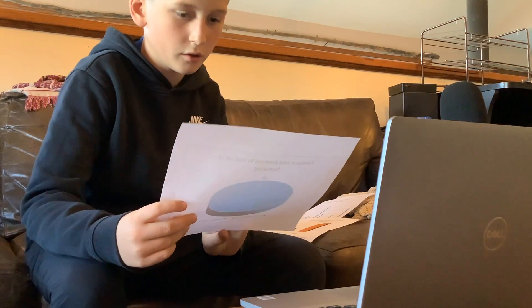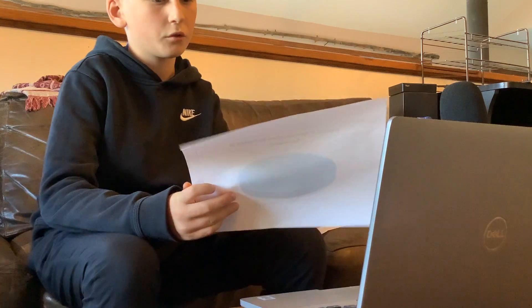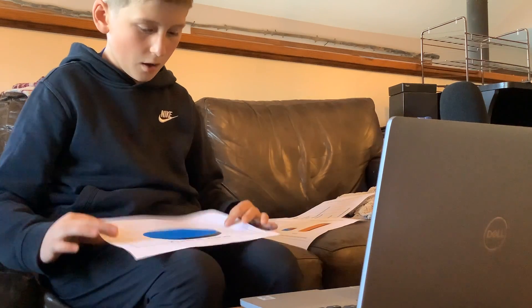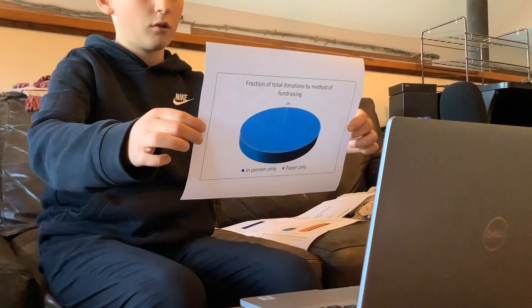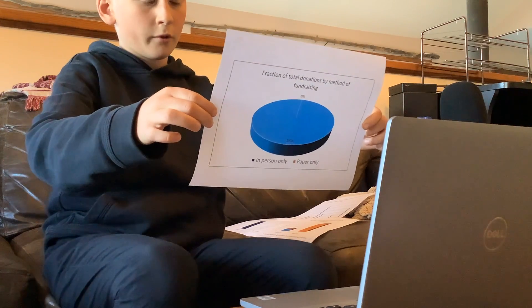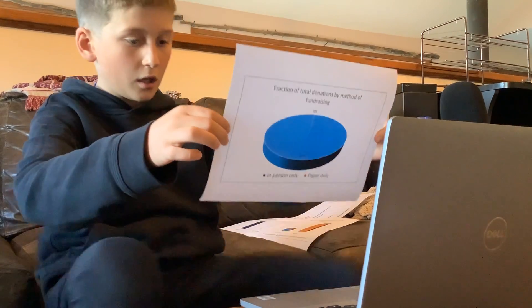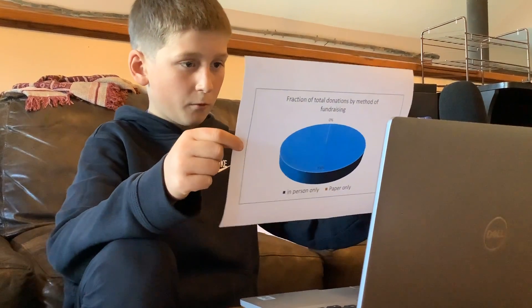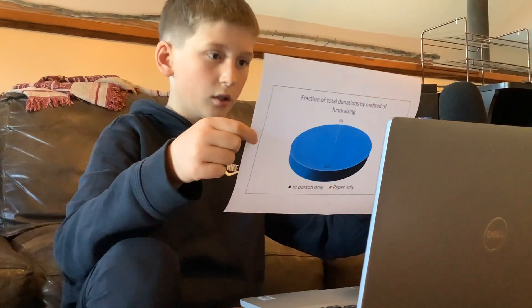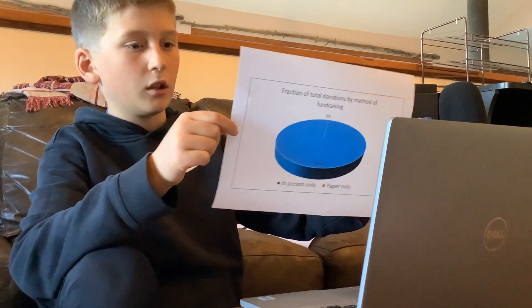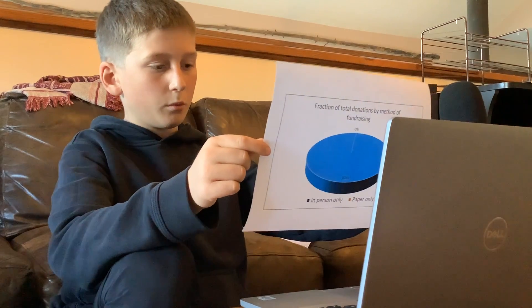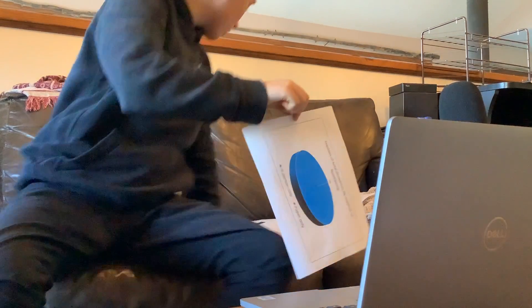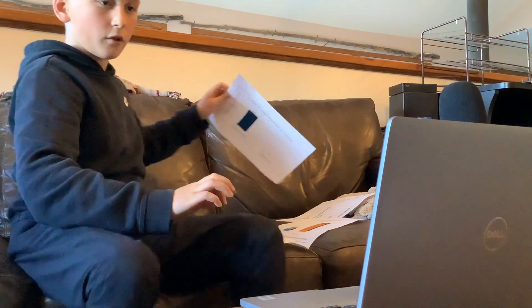I have four more charts. My next chart is the fraction of total donations by method of fundraising. My two methods are blue for in-person only and red for online. Blue is 100% because we only got donations doing it in person. Red is zero percent because we have not received any online donations. We stopped taking donations by May 15th, but put our information collected into the science fair.